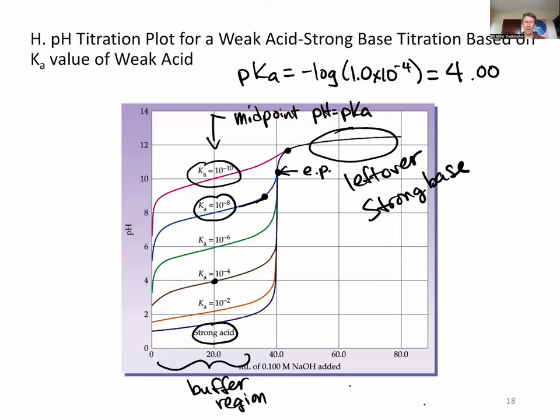And we've talked about how to solve for that. We've talked about how at the equivalence point, you've reacted away all your strong acid and all of your strong base, and you're left with just a solution of your conjugate weak base.